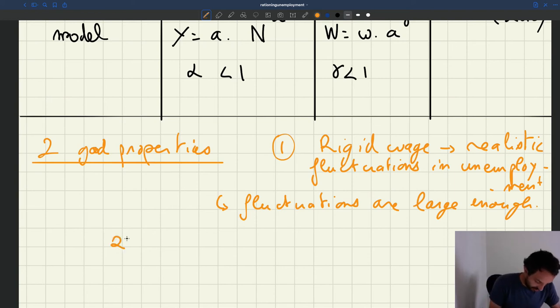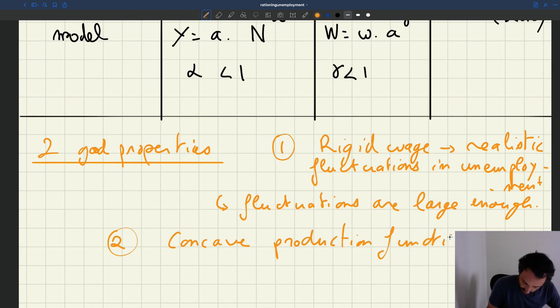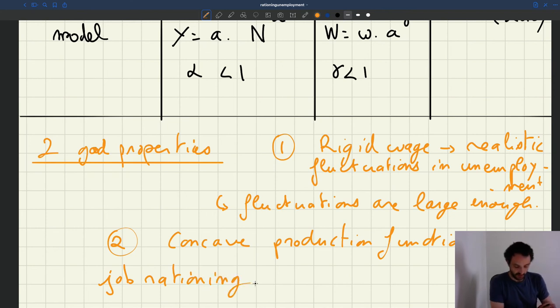The second property, which will be the focus of this lecture, is that because we have a concave production function, the model will feature some job rationing.